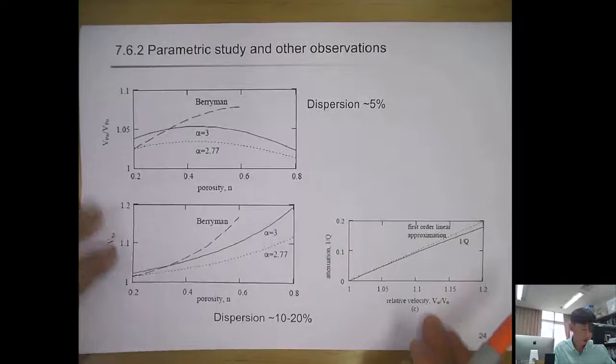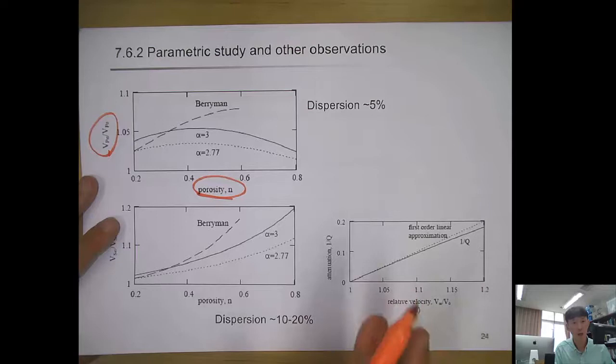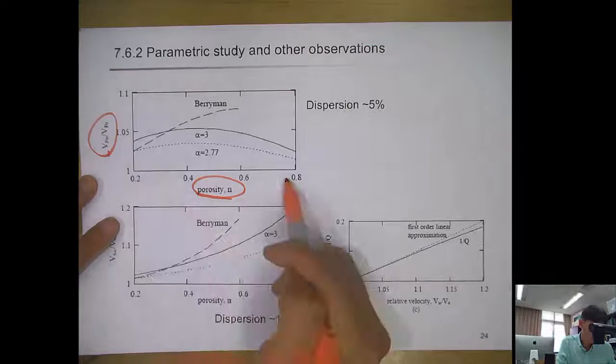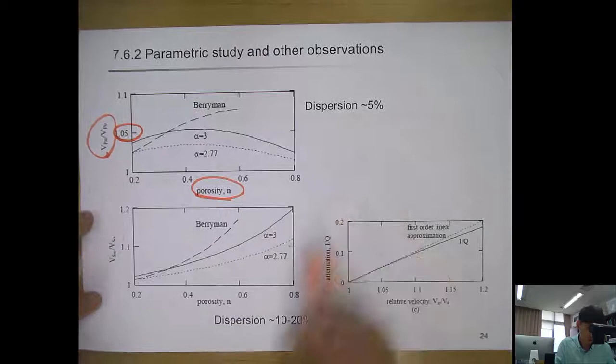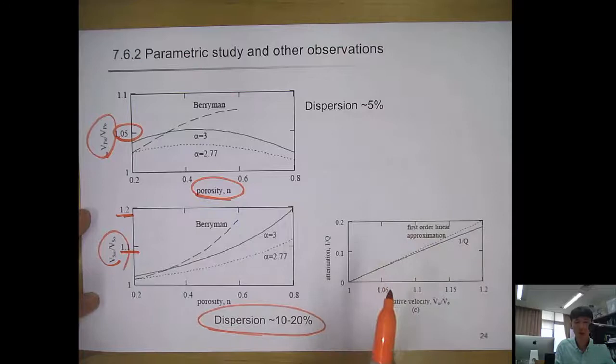For P wave, because fluid bulk modulus is higher than skeletal bulk modulus, porosity changes cause only about 5% dispersion. For shear wave, the dispersion can be 10–20%. So shear wave propagation is more sensitive to porosity changes in terms of dispersive behavior.